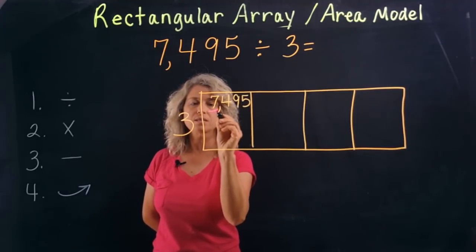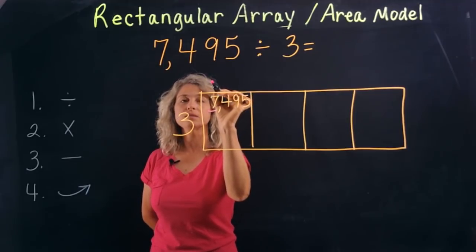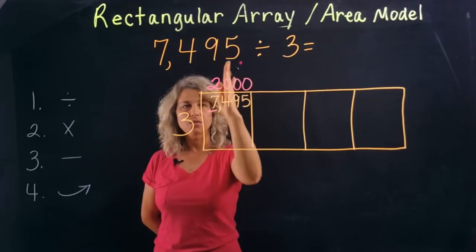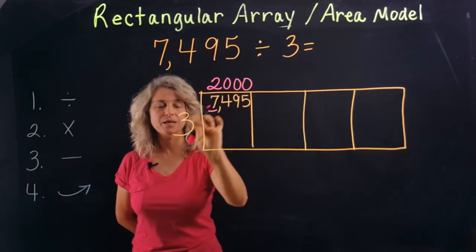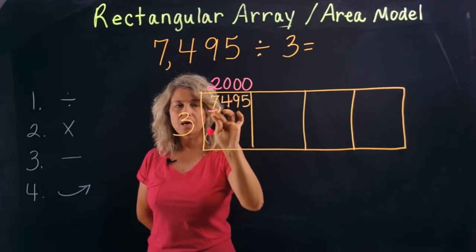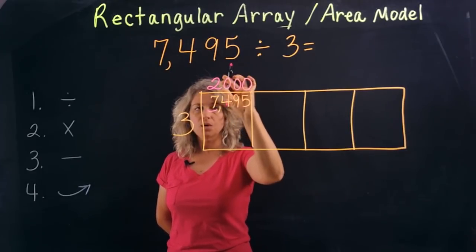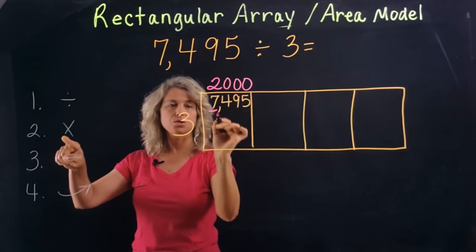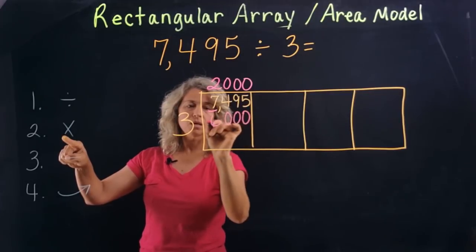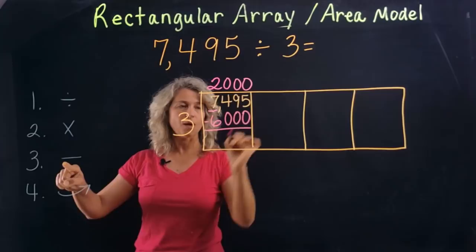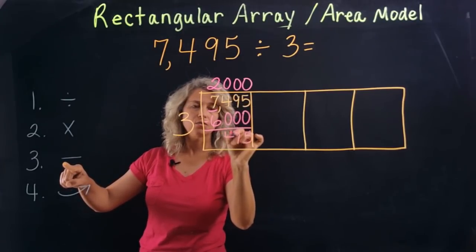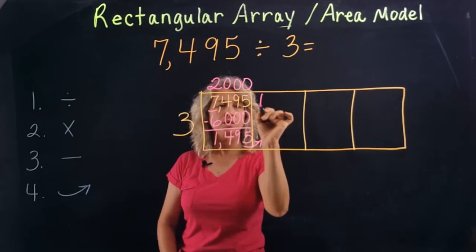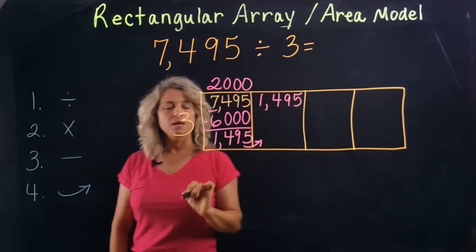Look at 3 and ask: can 3 go into 7? Yes it can — 3 will go into 7 two times. We'll add our zeros to fill in the rest of the digits, because the 7 is in the thousands place and we want to make sure we have the three digits representing the thousands. Step two: multiply — 3 times 2 is 6, don't forget to bring your zeros as well. Subtract, then bring down: 7 minus 6 is 1. Bring over to your next box — this is your number 1,495.